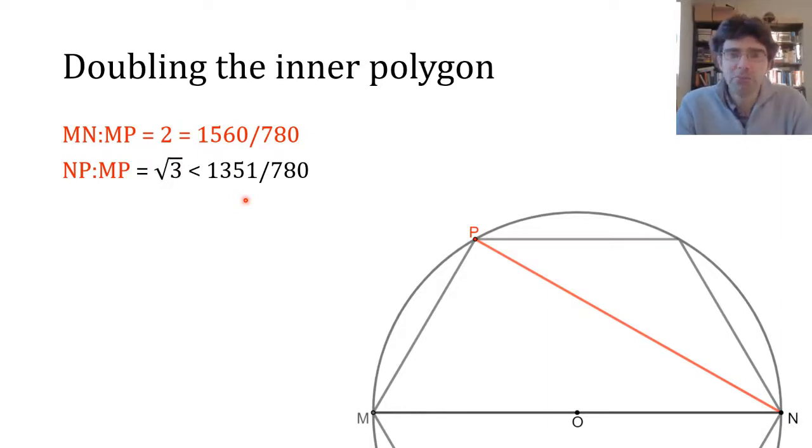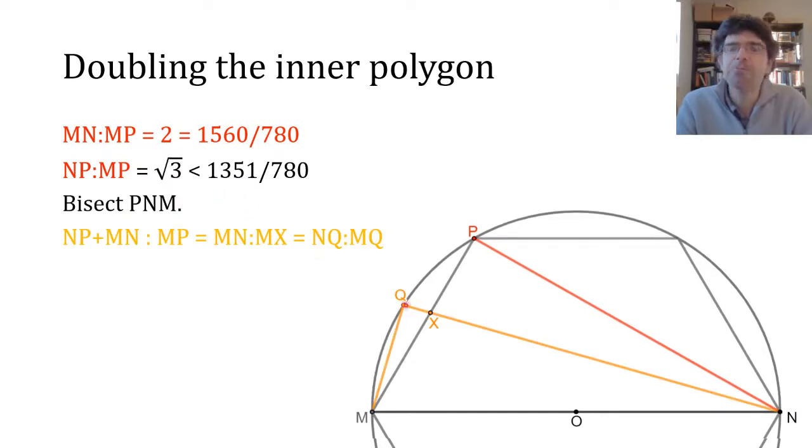Again we just keep drawing bisectors. So first we have NXQ where we put X on the segment MP and Q on the circumference of the circle. Now as we've seen already, MP plus MN to MP is equal to MN to MX. We use that with the outer polygon as well. But here there's an extra little trick. If we look at the triangles MXQ and NMQ, we see that the angle at Q is shared and QMX is equal to QNP is equal to QNM. So these are two similar triangles by angle-angle-angle similarity and therefore we have that MN to MX is also equal to NQ to MQ.